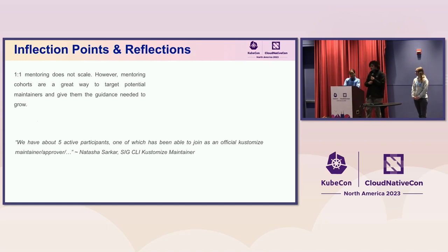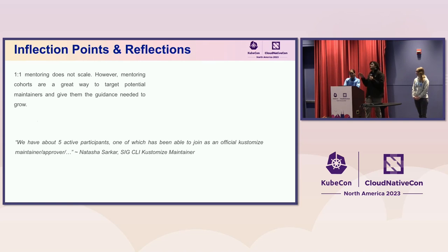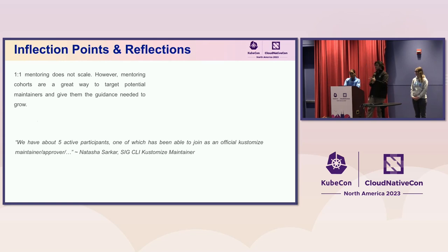This is a quote from Natasha Sarkar, a CLI kustomize maintainer, from the latest mentoring cohort. She said they had five active participants, and one of them is on the way to becoming an official maintainer in January — which is amazing. One of the things she said that really stood out: an open admission of a need for help went a long way for that project. Accepting the fact that your project needs the help of new maintainers, newer reviewers, and newer approvers set the tone for when they started the mentoring cohort.